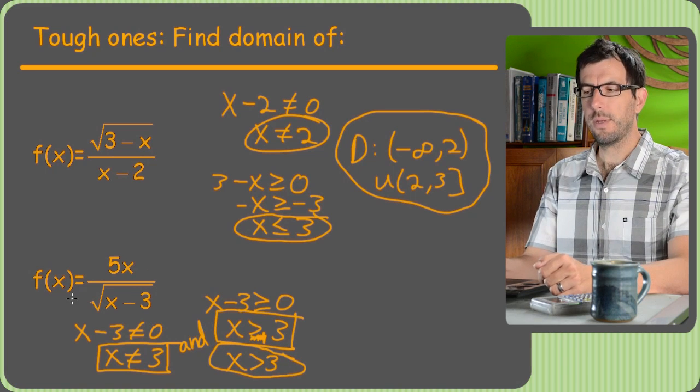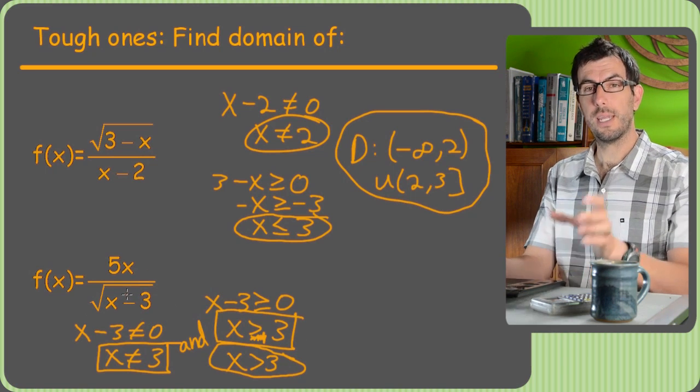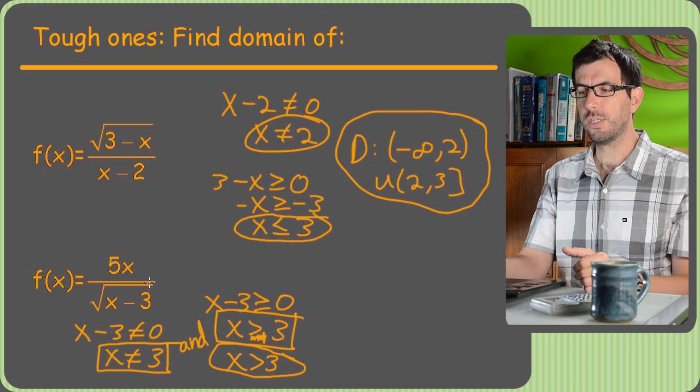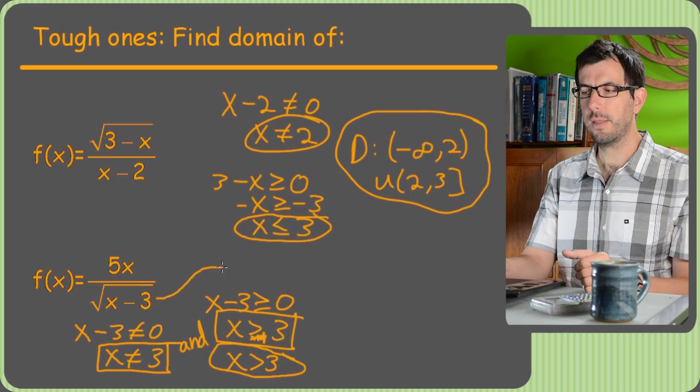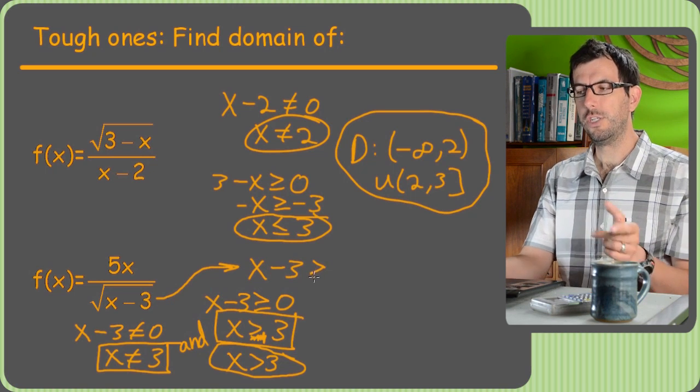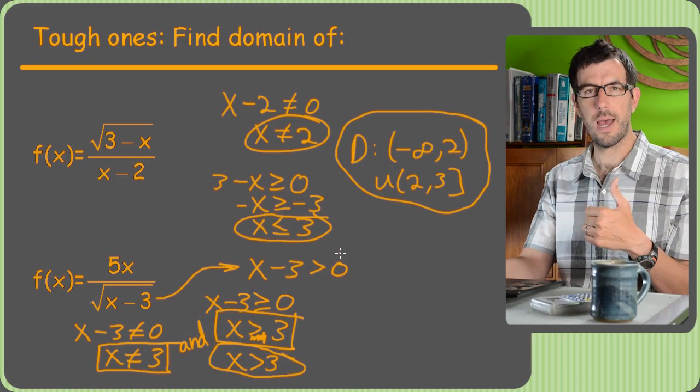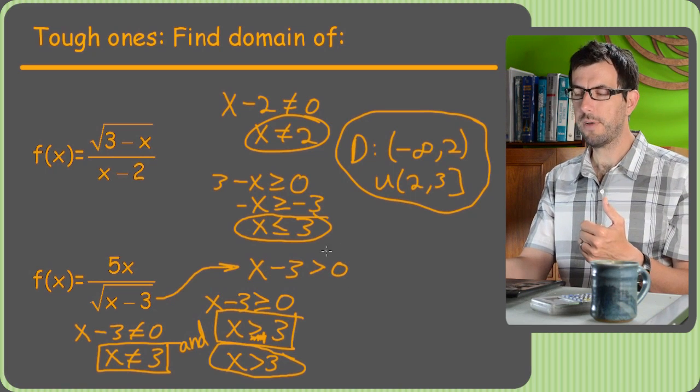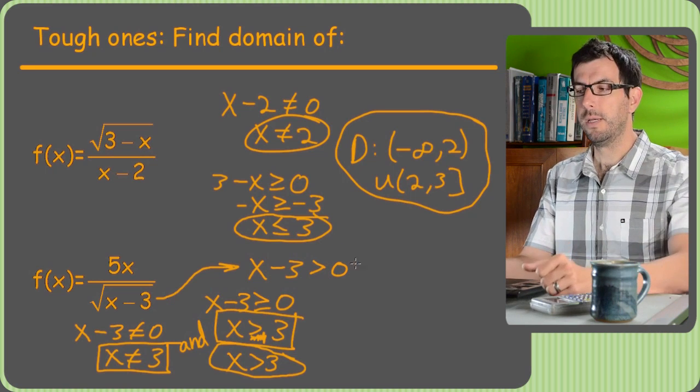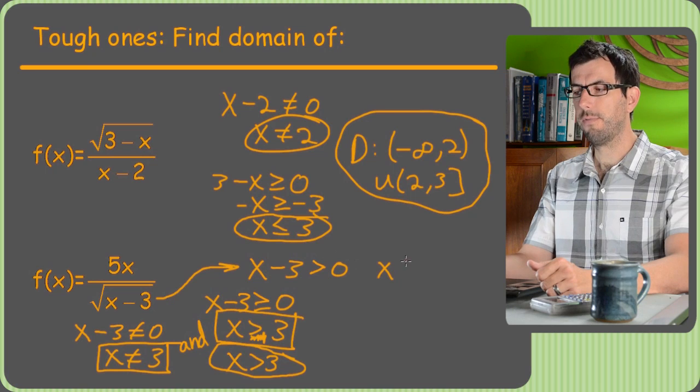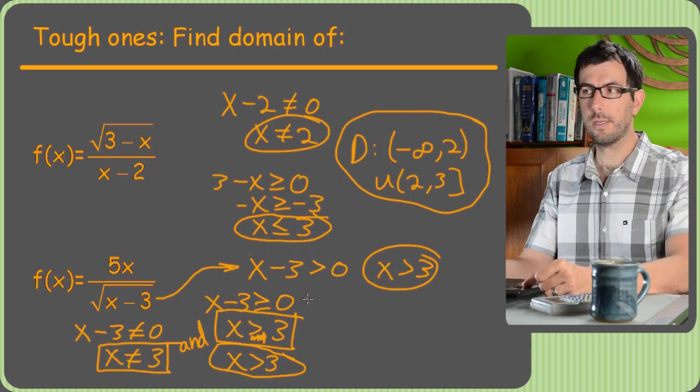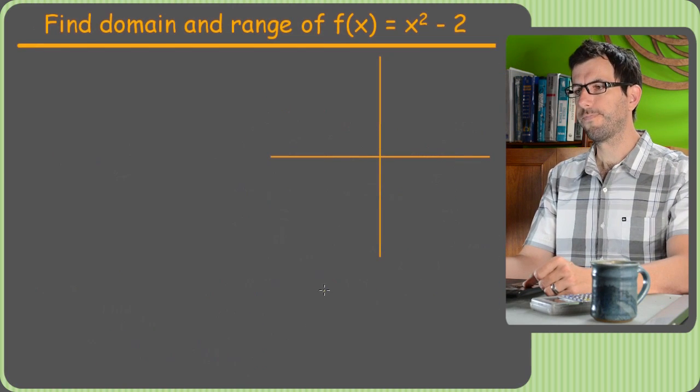That's going to be our answer. And this is always going to happen. When the square root is downstairs, you're always going to end up solving the same equation twice, once for the square root and once for dividing by 0. So what you can do is take the shortcut: if you have a square root in the denominator, just take whatever's inside, and instead of setting it greater than or equal to 0, just set it greater than 0. That's going to knock out both problems. This will stop you from taking the square root of a negative and from dividing by 0 at the same time. So you only have to solve an equation once.